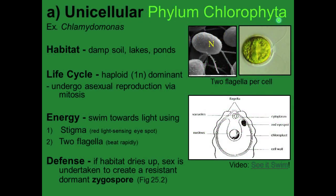For a unicellular Chlorophyta, an example is Chlamydomonas, found in damp soil, lakes, and ponds. Their life cycle is haploid dominant, and they undergo asexual reproduction via mitosis. They swim toward light using a stigma — a red light-sensing eye spot — and two flagella that beat rapidly. If their habitat dries up, they undergo sexual reproduction to create a resistant, dormant zygospore until the environment is suitable; that zygospore then undergoes meiosis and produces more haploid individuals.